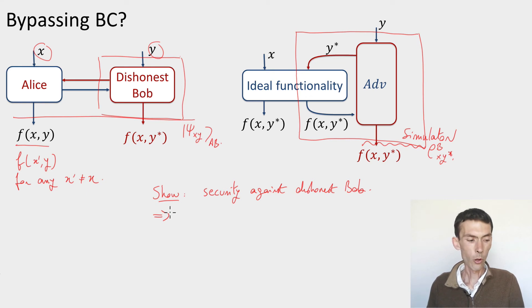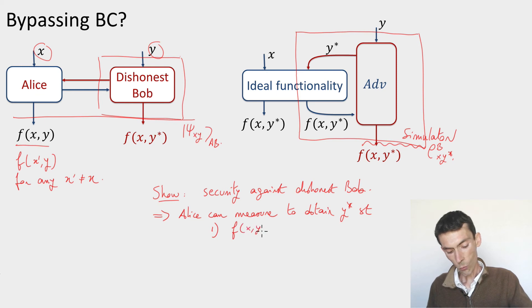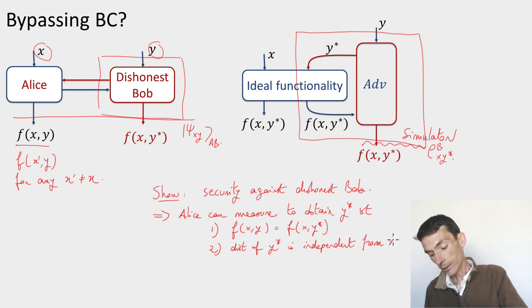And now what you can argue are two things. You can show that if the protocol is secure against this dishonest Bob implies that now if a potentially malicious Alice is interacting with the honest Bob, there exists a purification of the protocol in which Alice has a state such that she can measure one of the additional registers of the purification to obtain a y star not necessarily equal to Bob's input y. Remember that here I'm thinking of a semi-honest Bob, but such that two things hold. First of all, it is the case that f of x y is equal to f of x y star.